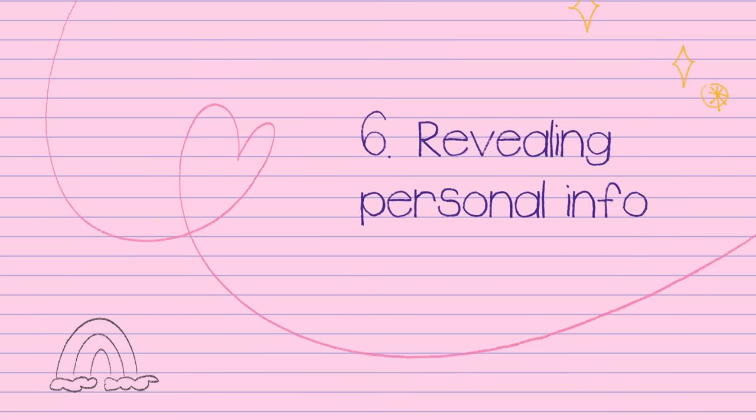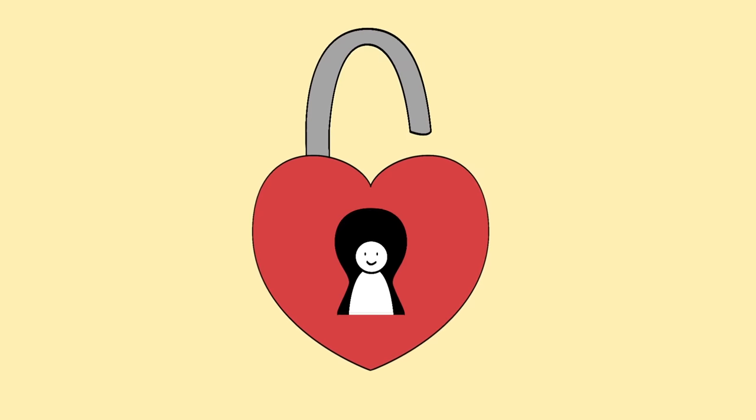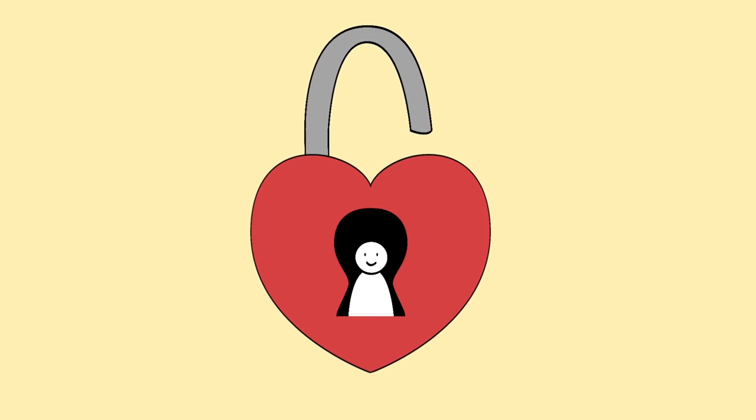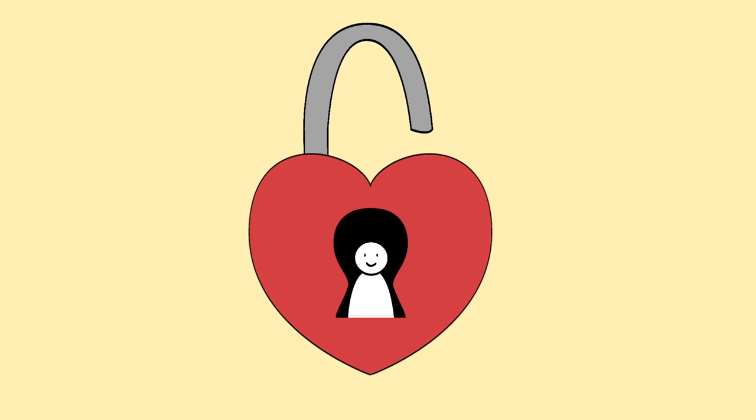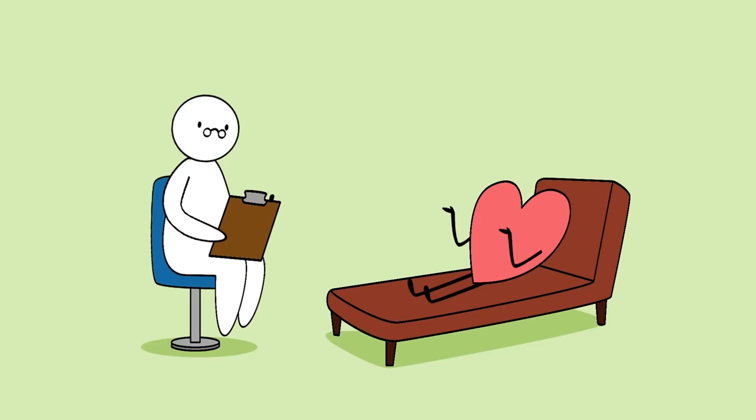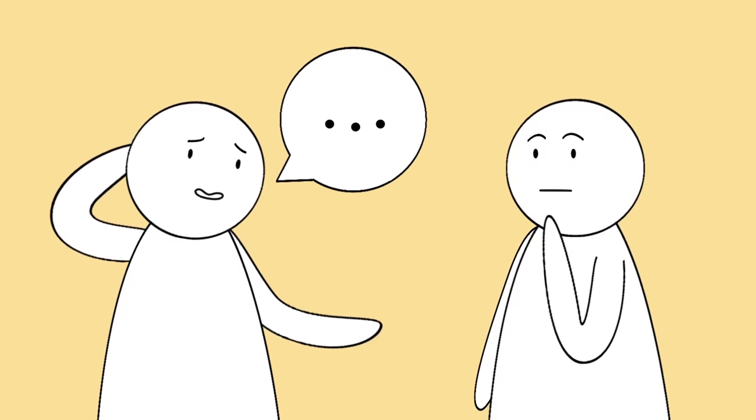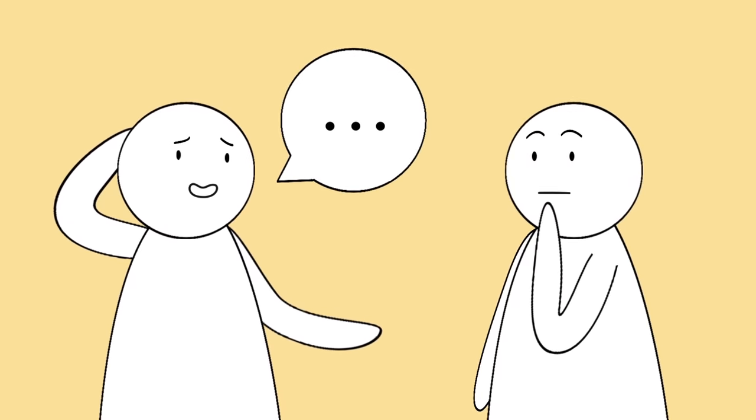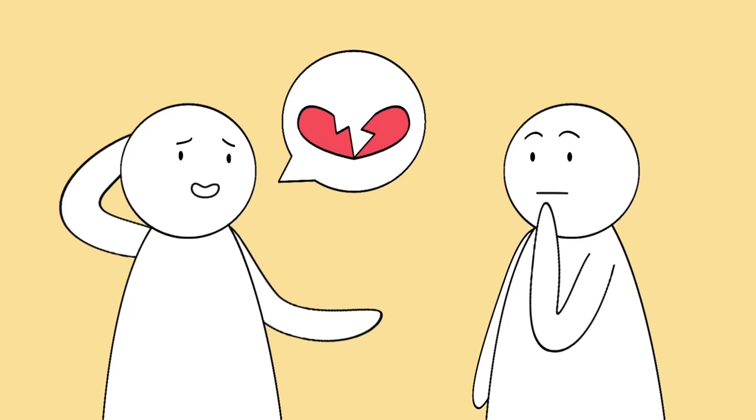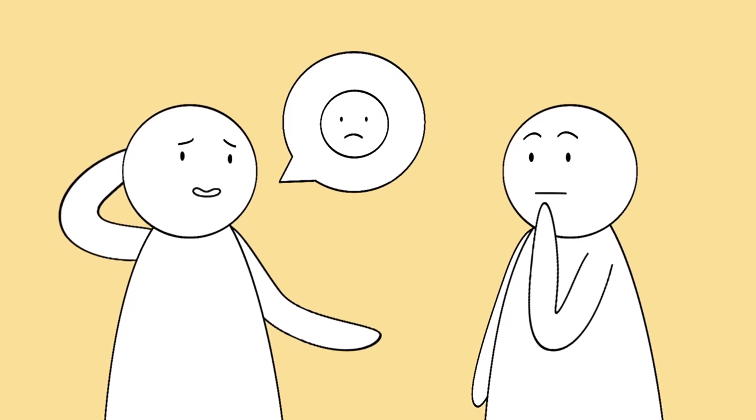6. Revealing personal info. As a general rule, the more personal info a person reveals, the more interested they are in you. That's what a recent study found when they studied flirting techniques. This can still be done in a subtle way. For example, someone might reveal that they're dealing with a heartbreaking loss or a major setback, but in a slightly casual way.